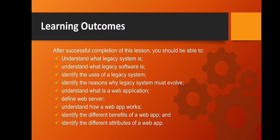Our learning outcomes for today's topics are as follows: understanding what a legacy system is, understanding what legacy software is, identifying the uses of a legacy system, identifying the reasons why a legacy system must evolve, understanding what a web application is, defining what a web server is, understanding how a web application works, identifying the different benefits of a web app, and identifying the different attributes of a web app.